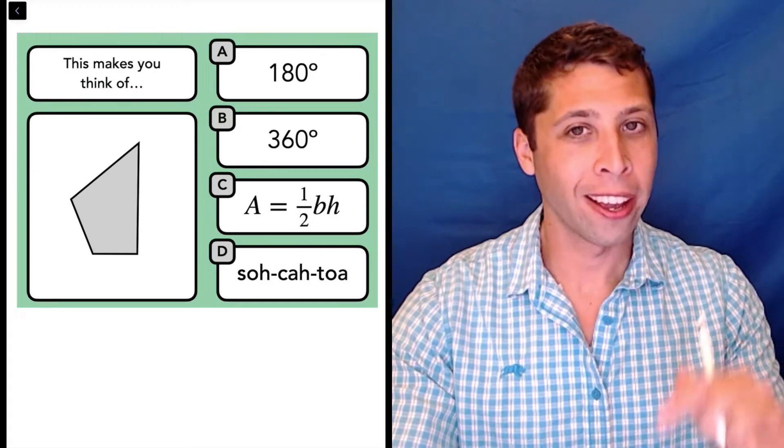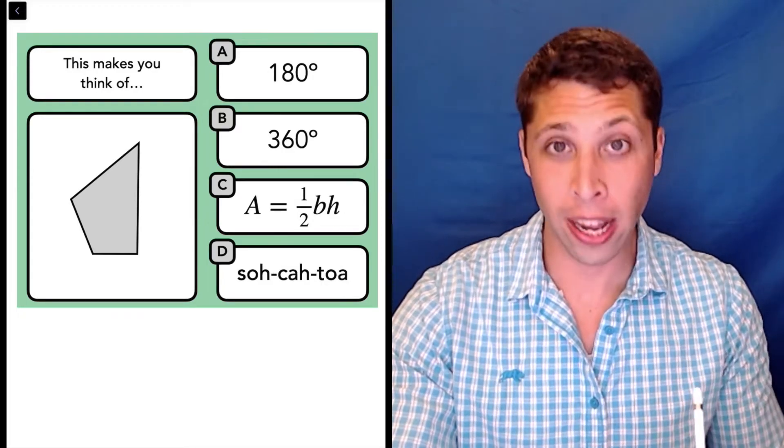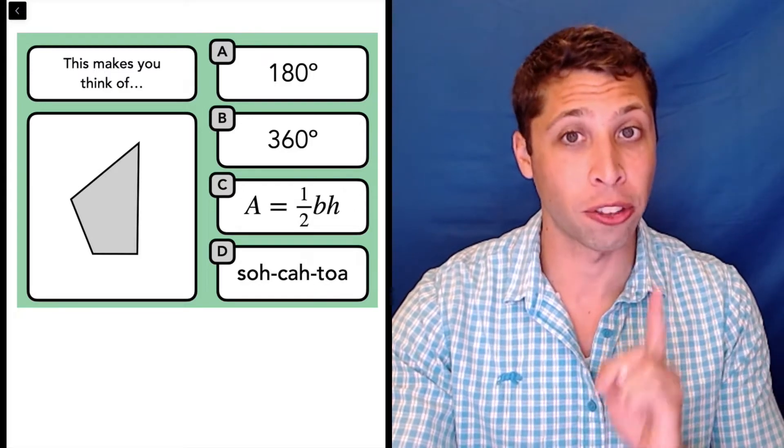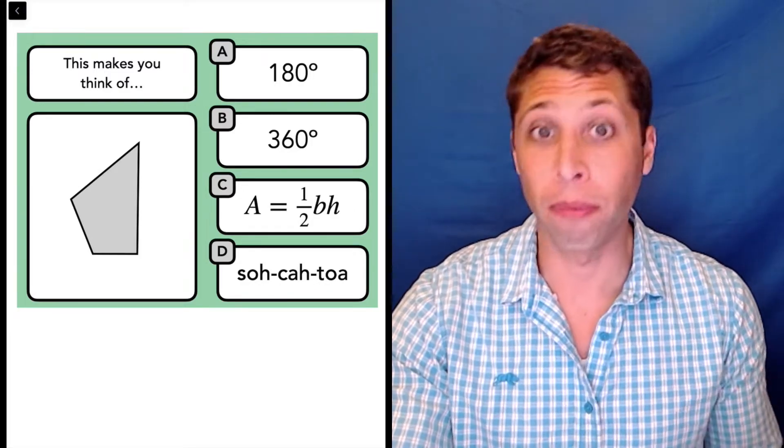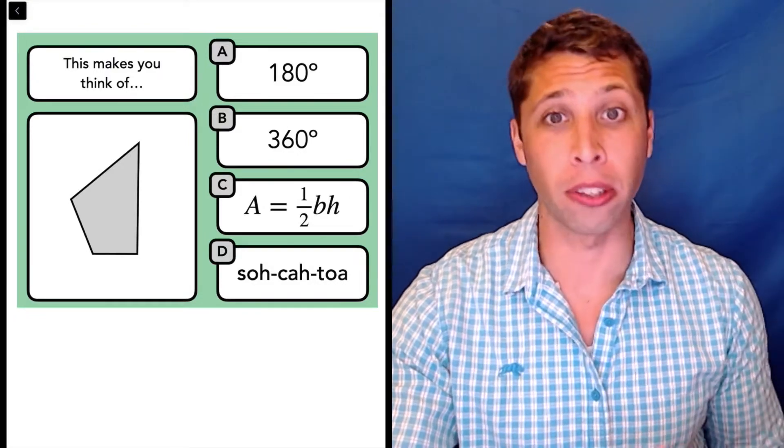You need to memorize this rule, okay? On the SAT, in the reference chart at the beginning of each math section, they tell you that there's 180 degrees in a triangle and 360 degrees in a circle, both very important pieces of information. You will absolutely use that on the test.